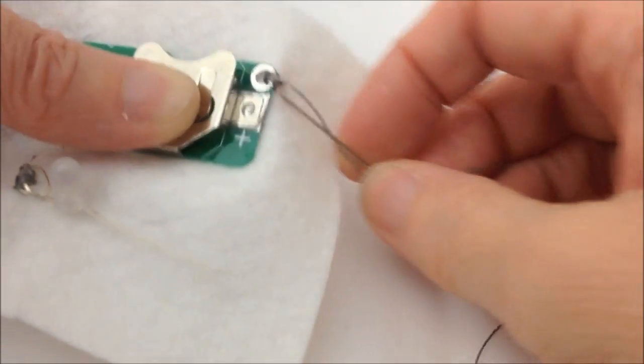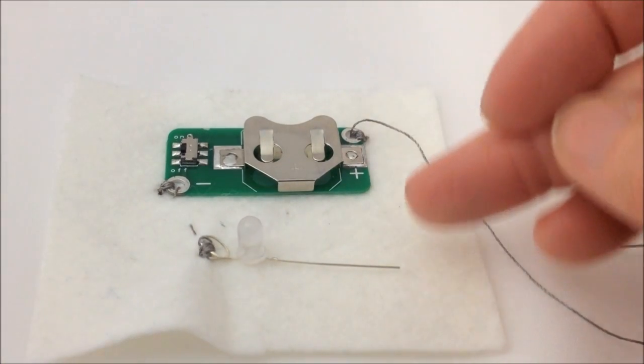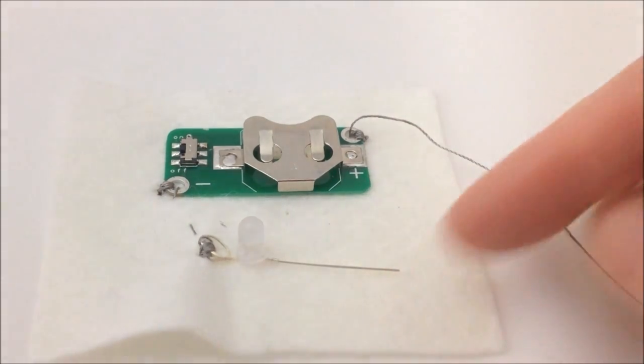Pull it nice and tight after each stitch has been produced. We're going to stitch from the cell holder down to the positive side of the LED leg, but first of all we'll need to twist this leg just like we did on the negative one.